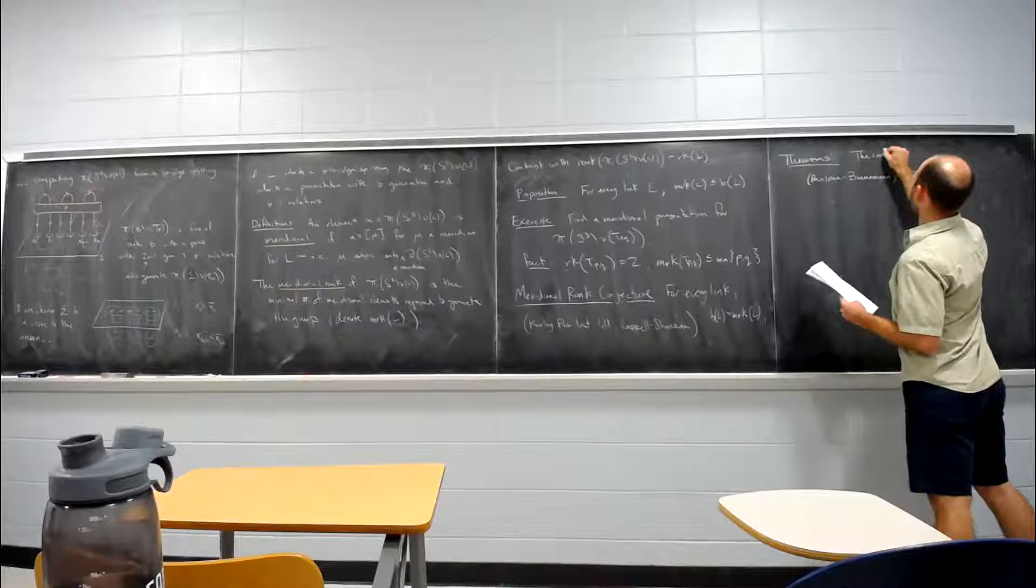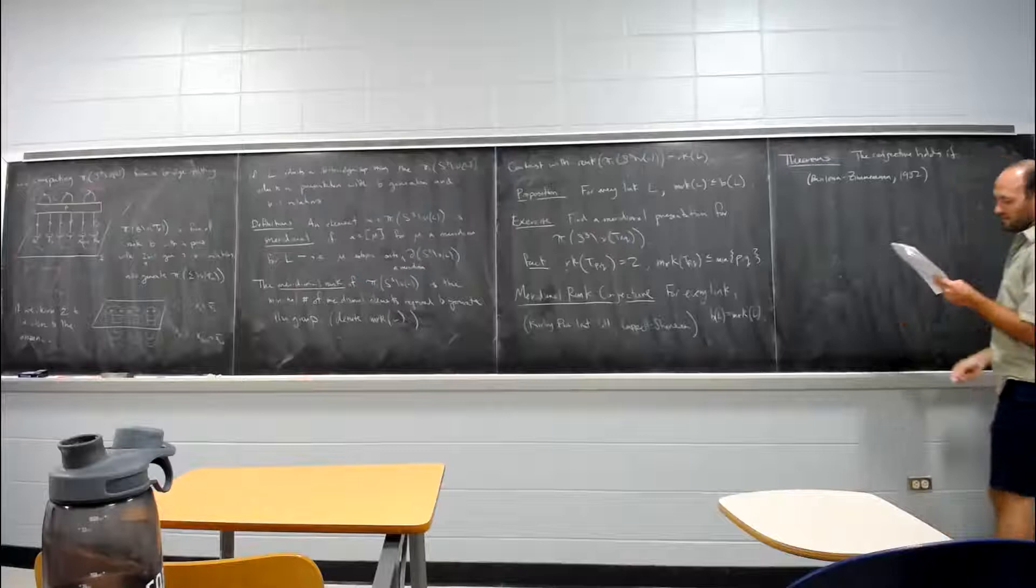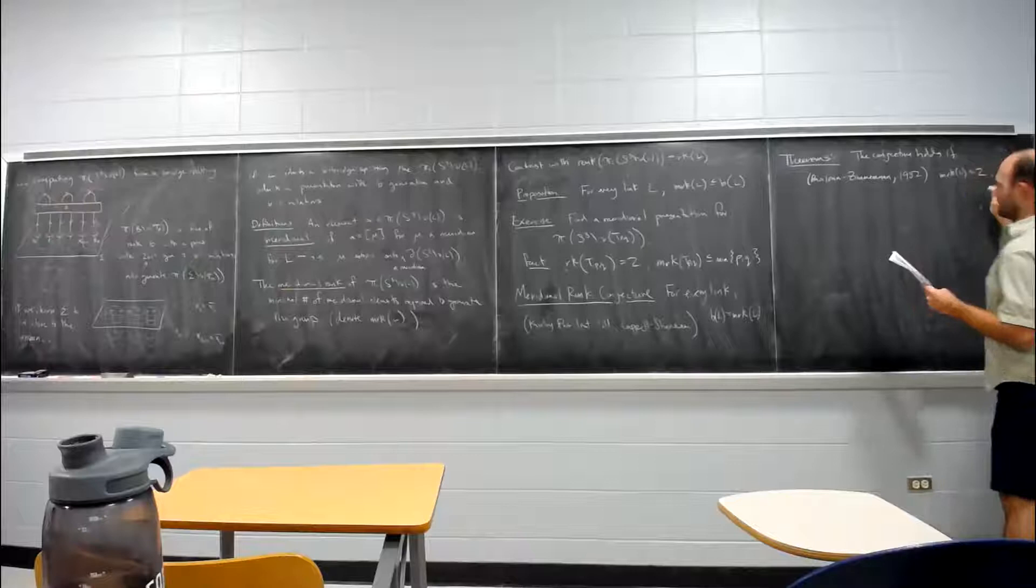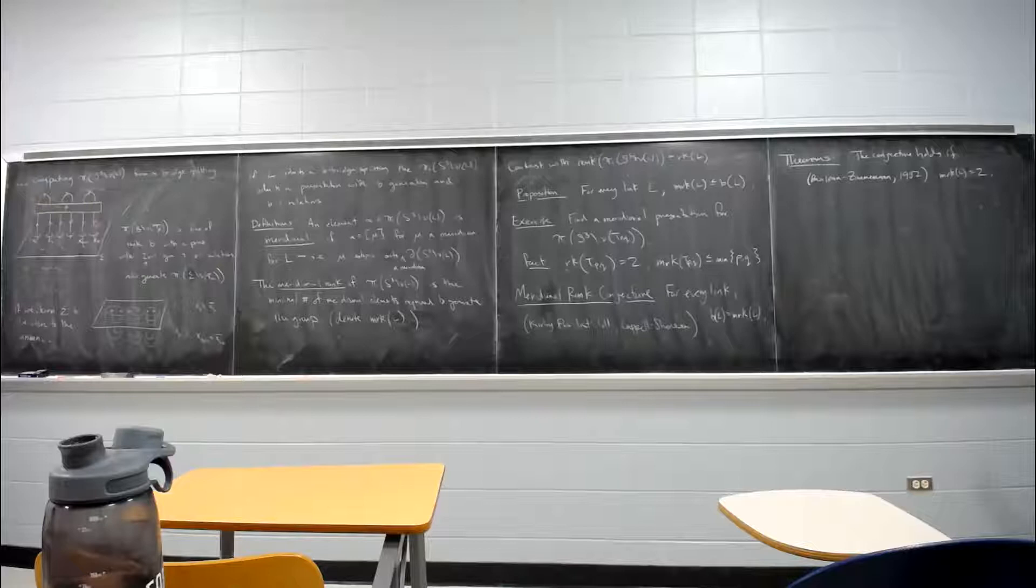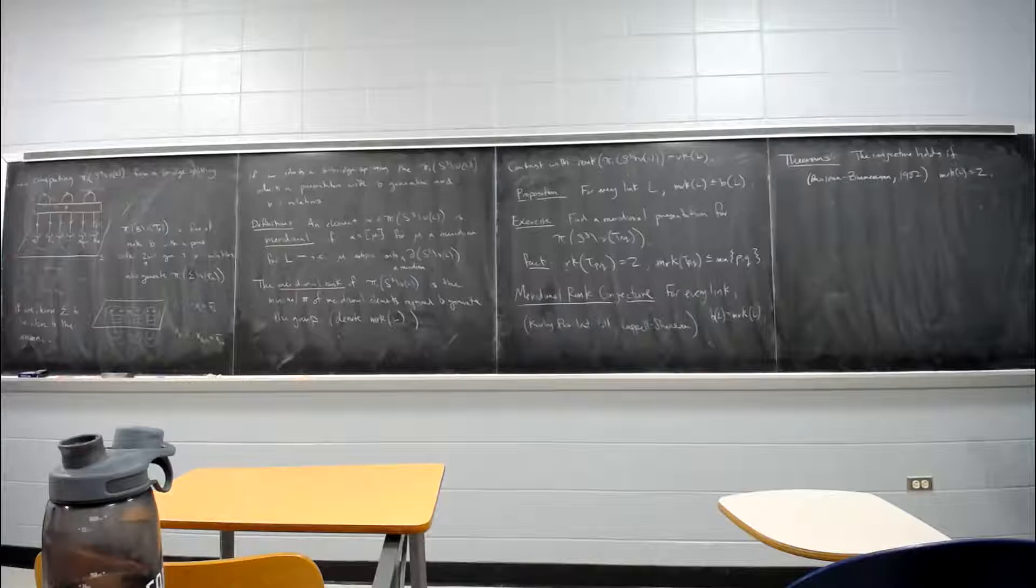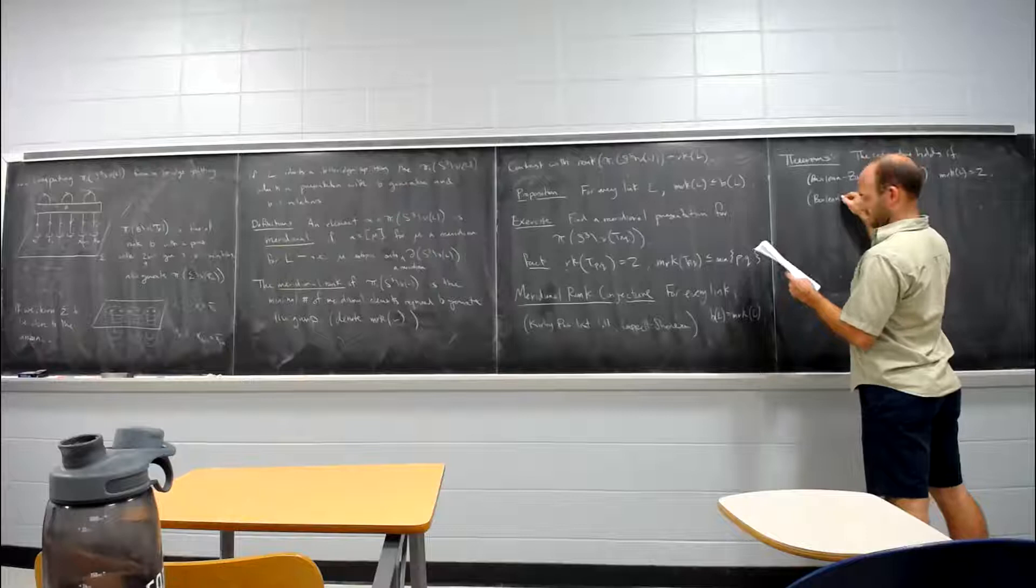So the conjecture holds if the meridional rank of L is two. Is it the same thing as a bridge number? Is the rank of two? I guess it's probably the same, at least. And Guo Luozi Xing.